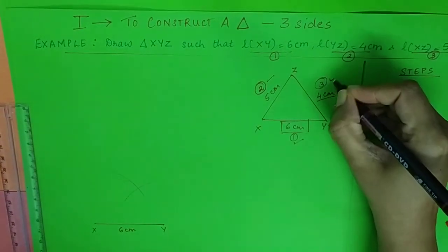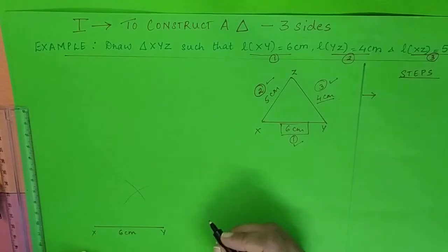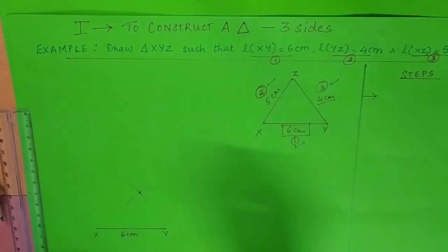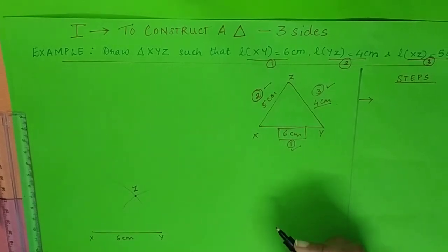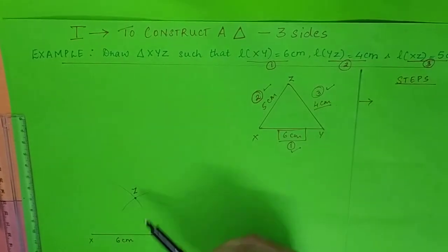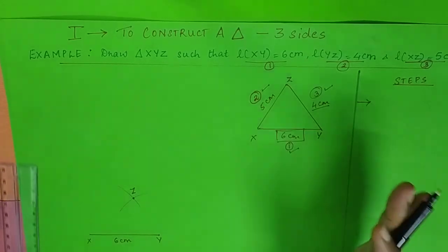My third step is also complete - that's the third side. If you notice, both the arcs are meeting at a point, and that point is nothing but the vertex Z. Now this completes the construction, but not my triangle.